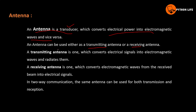A transmitting antenna is one which converts electrical signals into electromagnetic waves and radiates them.